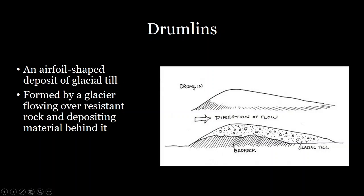As the glacier moves, it hits this bedrock feature and can't erode it away. The resistance to flow caused by this bedrock causes glacial till to be deposited behind it. You have a tail of the drumlin mostly filled with sediment, whereas the front of the drumlin will be mainly bedrock. You can always look at a drumlin and know that the steep side is where the glacier was flowing into, and the long side is pointing away from the glacier.